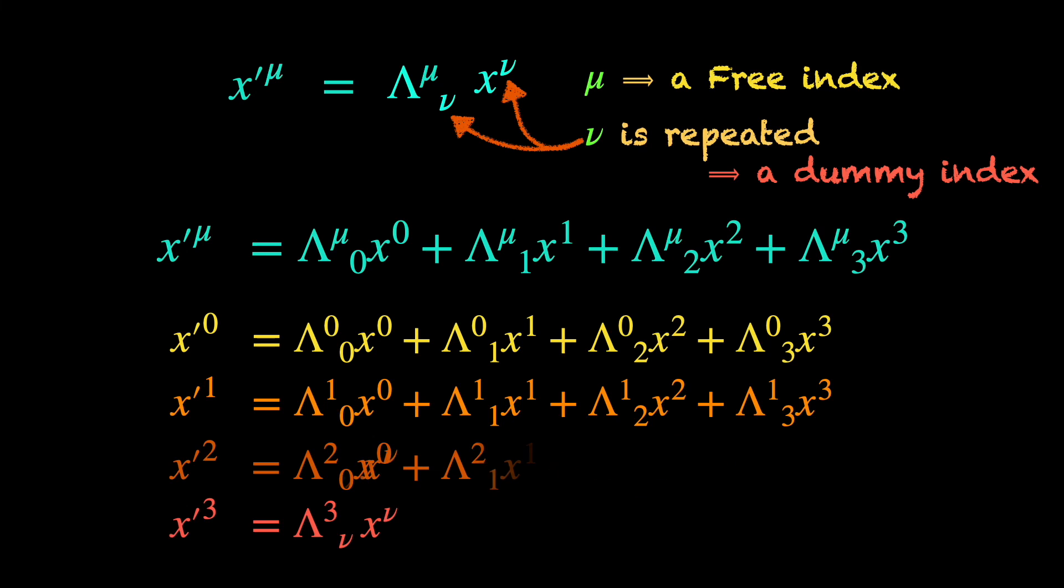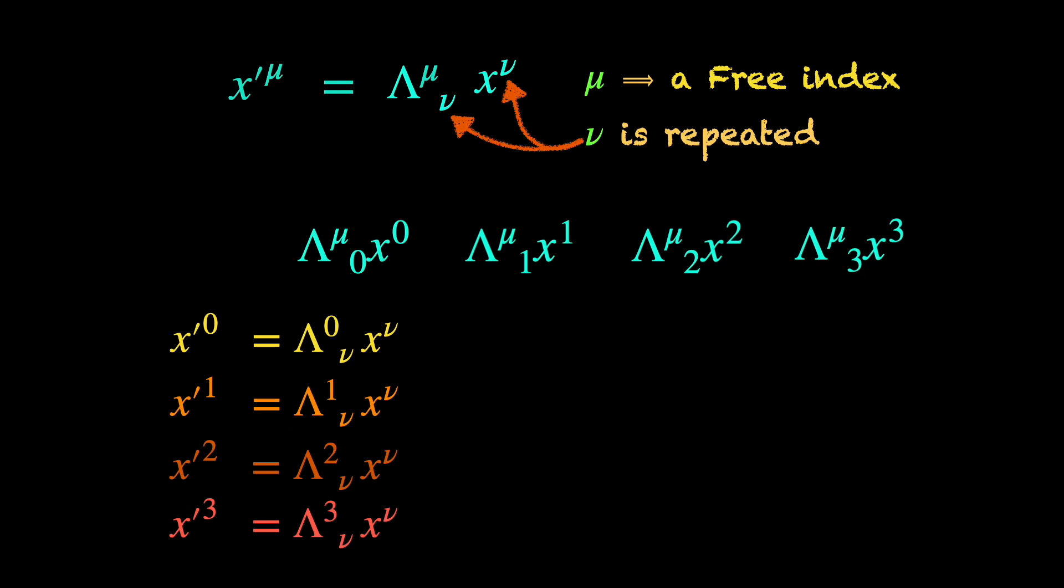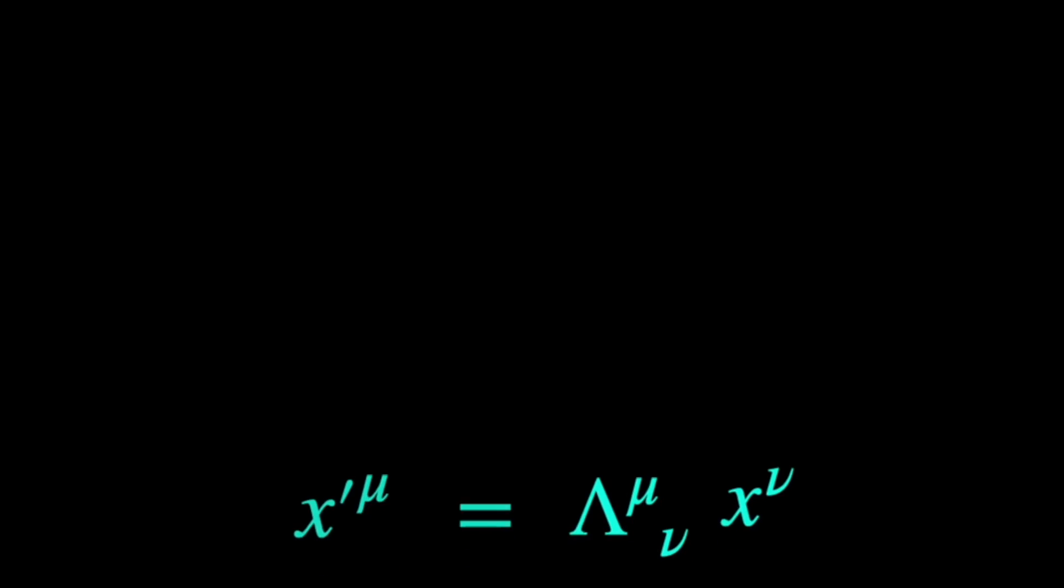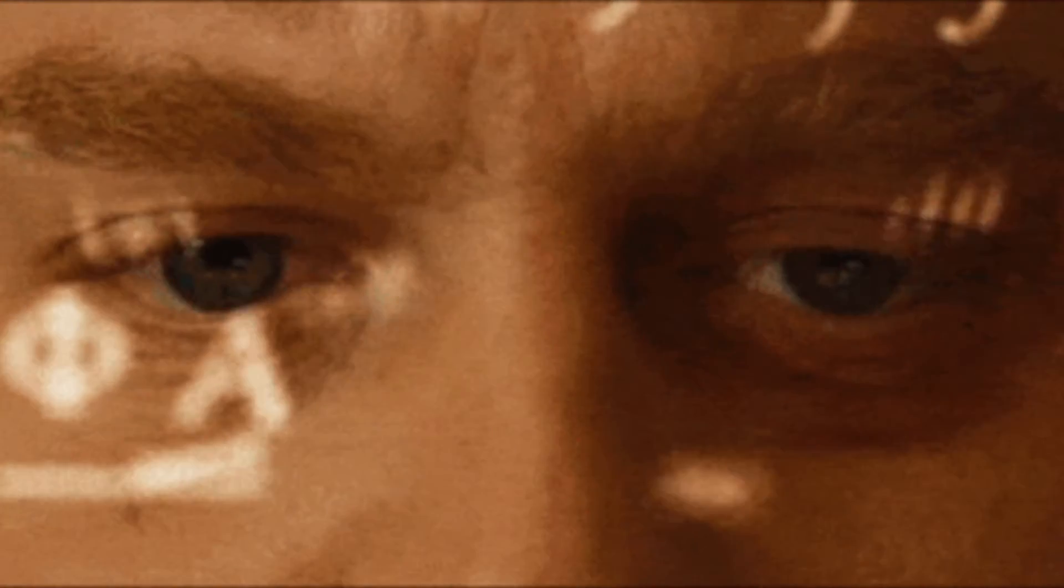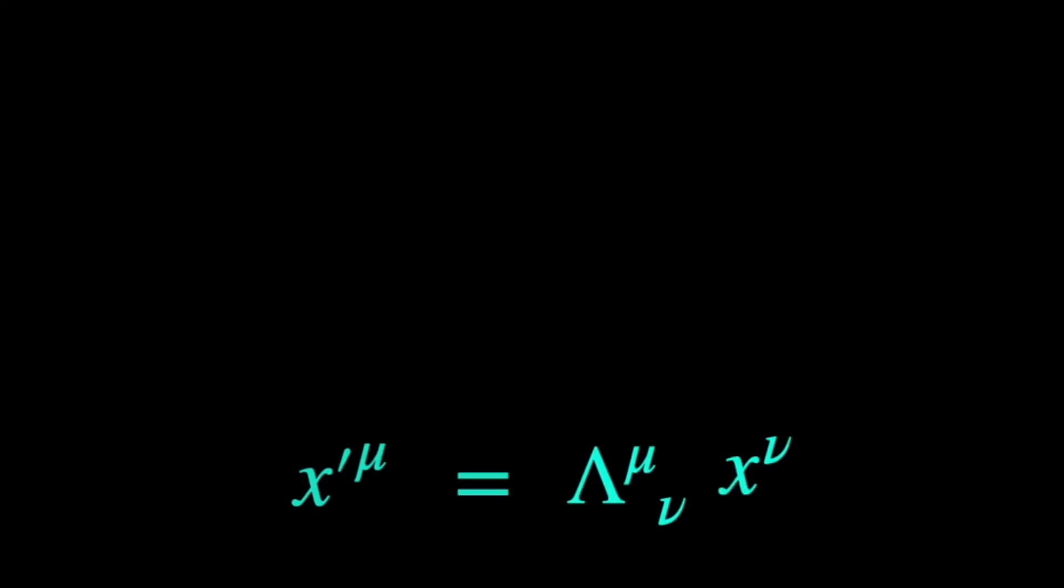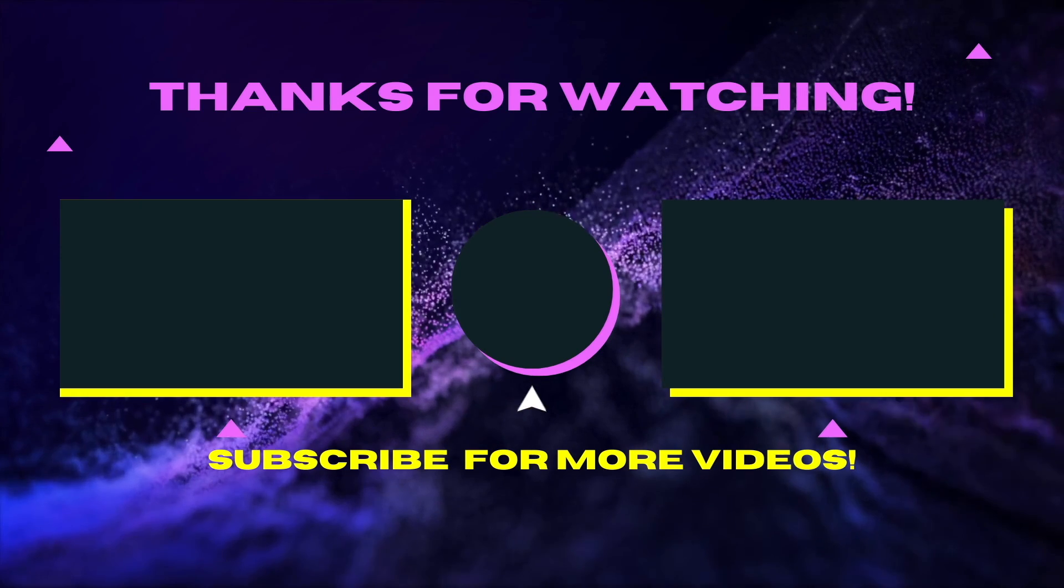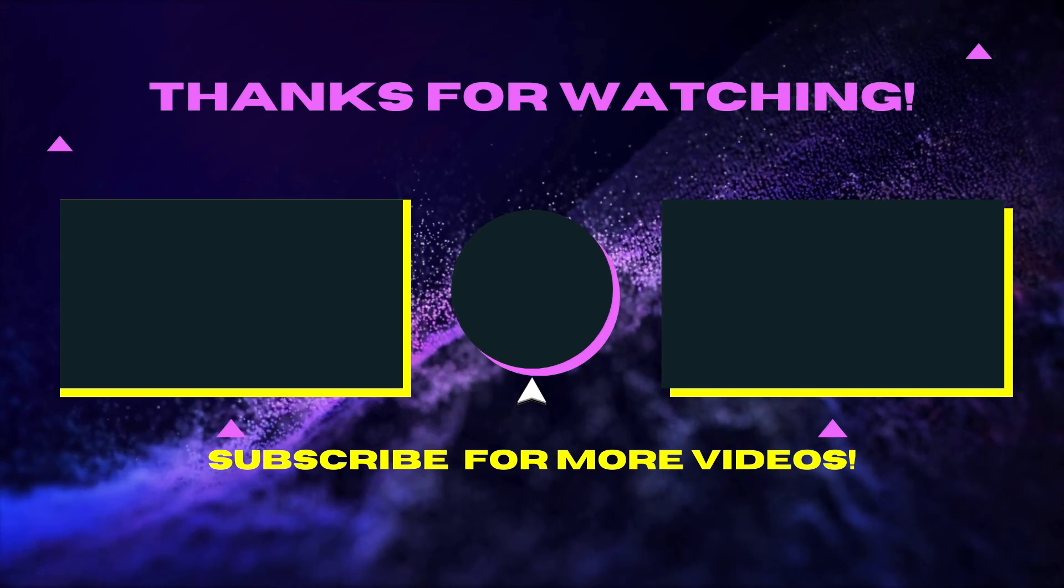Of course, it saves us a lot of writing, but most important of all, it gives a neat bird's eye view of a whole lot of system of equations and that sometimes, in fact many times, helps physicists decipher the deep physical significance hidden in the mathy stuff. For example, this Lorentz transformation equation in this indexed condensed form helps us define four vectors in special relativity. But that's the topic of the next video.